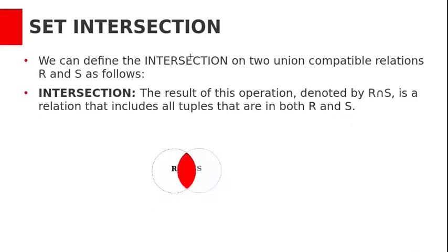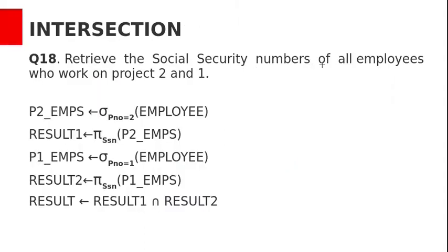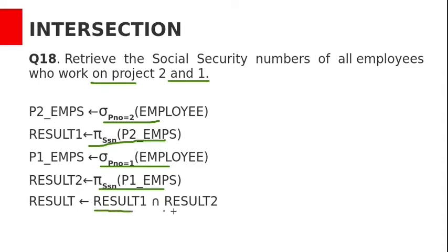Set intersection. We can define intersection on two union compatible relations R and S. The result, denoted by R intersection S, is a relation that includes all tuples that are in both R and S. For example, retrieve the social security numbers of all employees who work on both project 2 and project 1. We project SSN from project 2 employees and project 1 employees, then take the intersection.